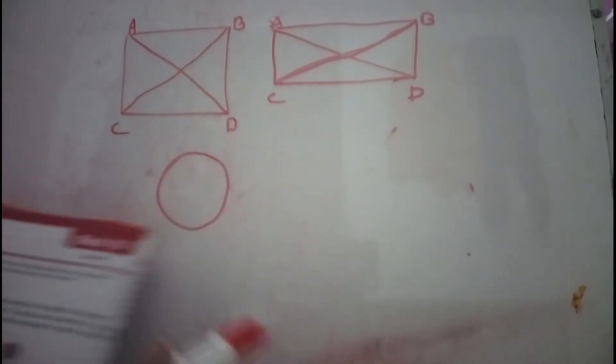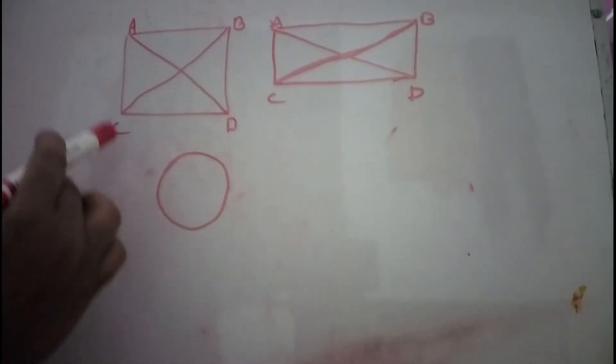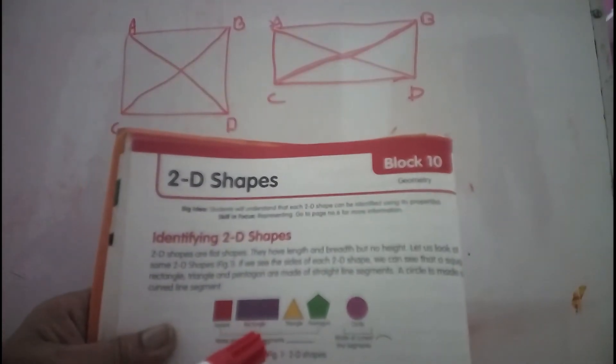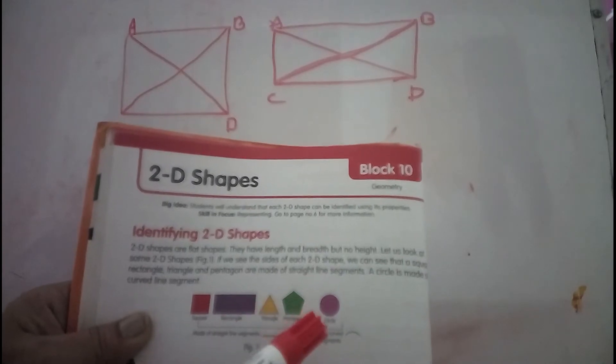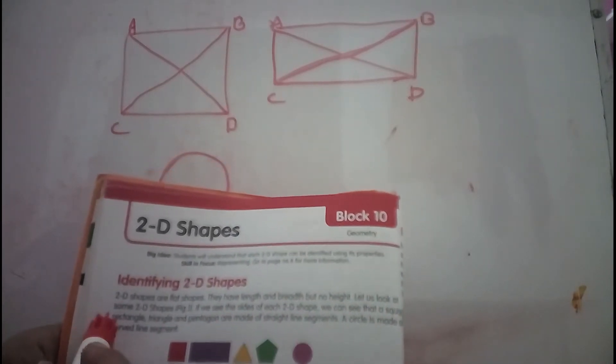I have also drawn some figures and in your textbook, see this figure. This is a square, rectangle, triangle, pentagon and circle. If we see the sides of each 2D shape, we can see that a square, rectangle, triangle and pentagon are made of straight line segments. A circle is made of curved line segments.